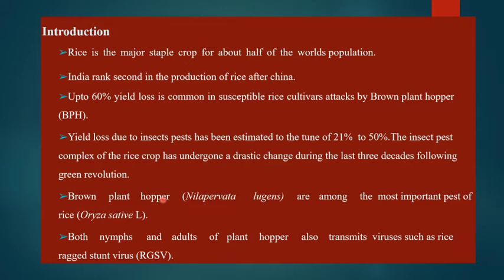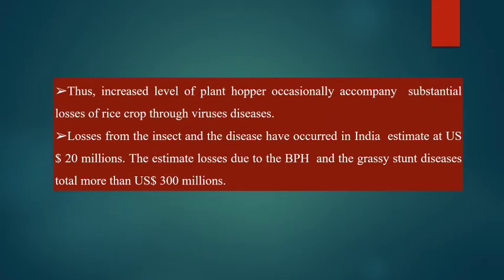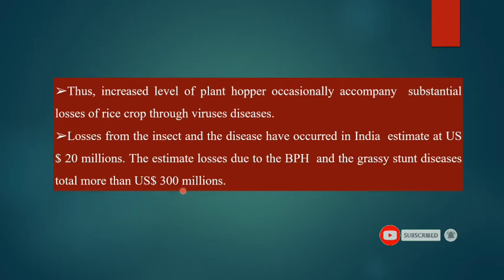Both the nymph stage and adults of the plant hopper transmit viruses such as rice ragged stunt virus. This increases the level of the plant hopper outbreak and decreases the rice crop substantially through virus diseases. Losses due to BPH and grassy stunt diseases total more than 300 million, occurring in India and also in the US.